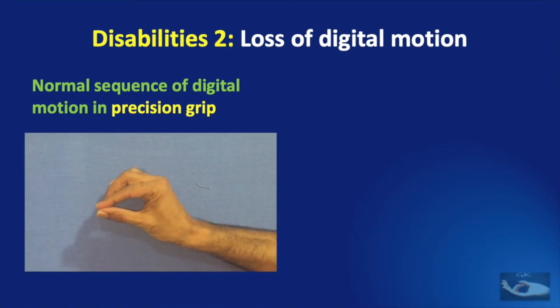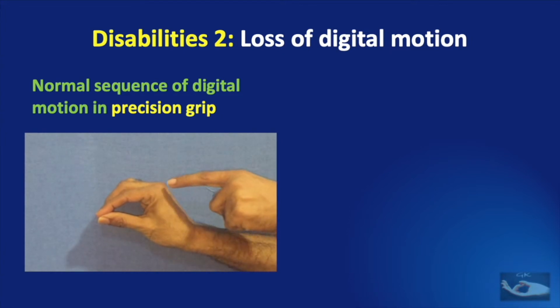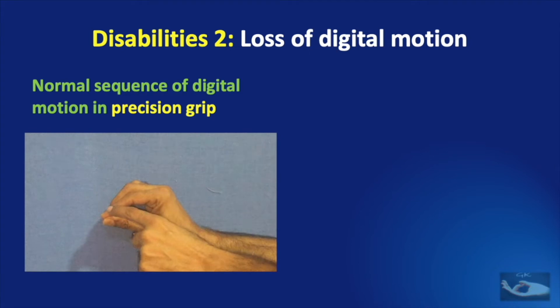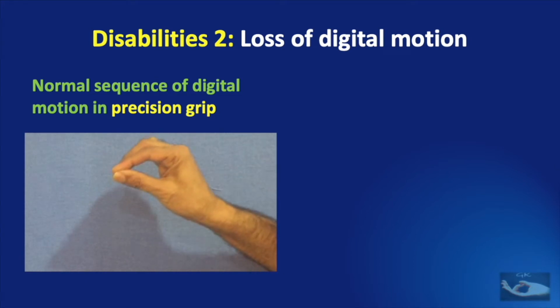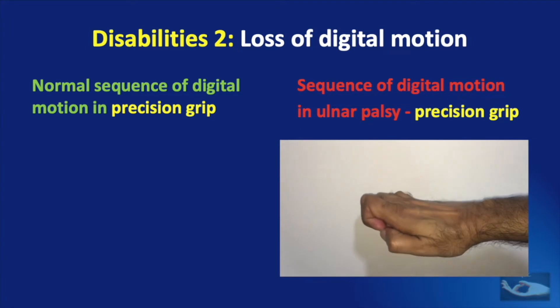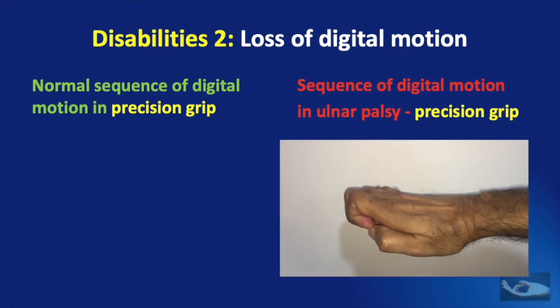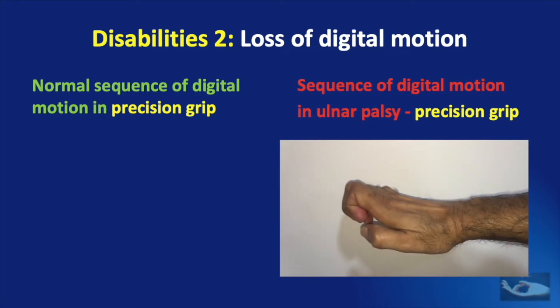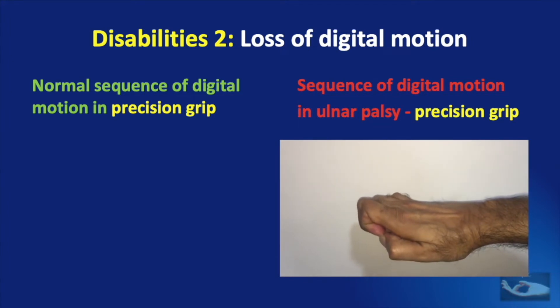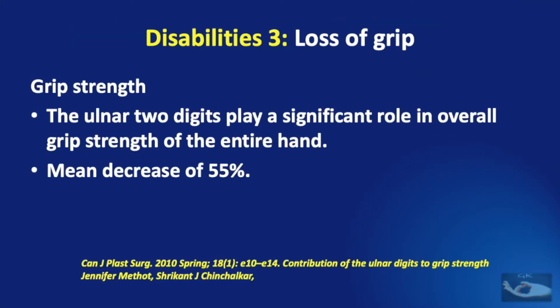For a good precision grip, the MCP joint must be kept flexed with the interphalangeal joints extended on the fingers, and on the thumb the MCP joint in minimal flexion with minimal IP joint flexion. In Ulnar Nerve Palsy, this precision grip is also lost because there is hyperextension at the MCP joints with flexion at the IP joints on the fingers, and hyperextension at the MCP joint with acute flexion at the IP joint on the thumb. The third disability is the loss of grip — there is a reduction of approximately 55% in grip strength because the ulnar two digits play a significant role in overall grip strength.